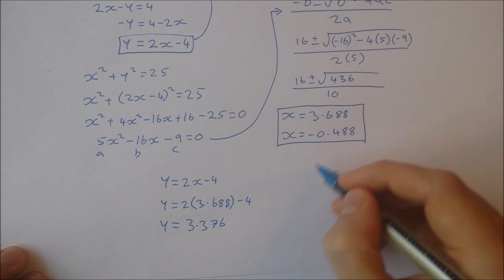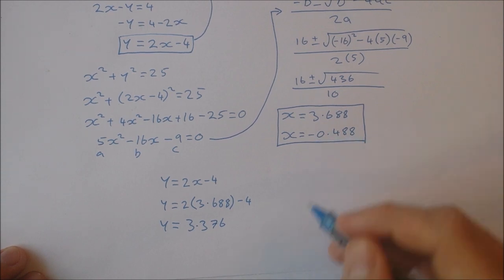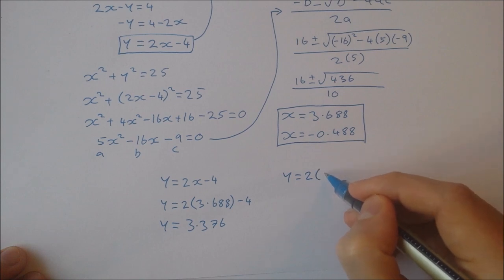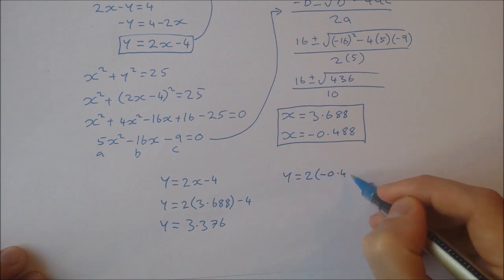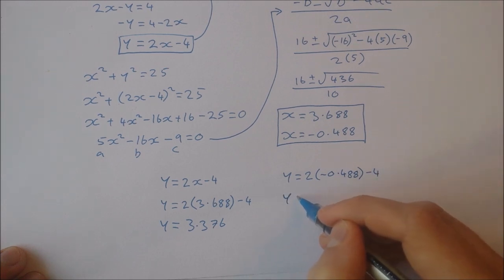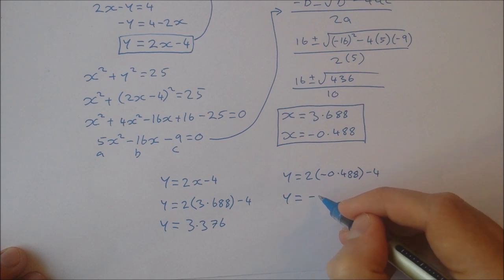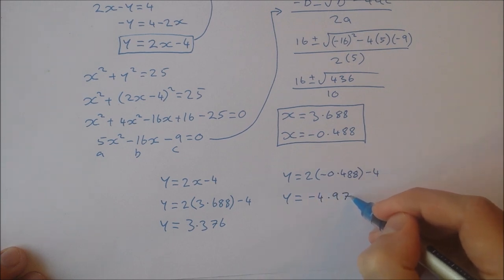The other one then, substituting in minus 0.488, I get y equal to 2 times minus 0.488 minus 4. So then y, that works out to be y equal to minus 4.976.